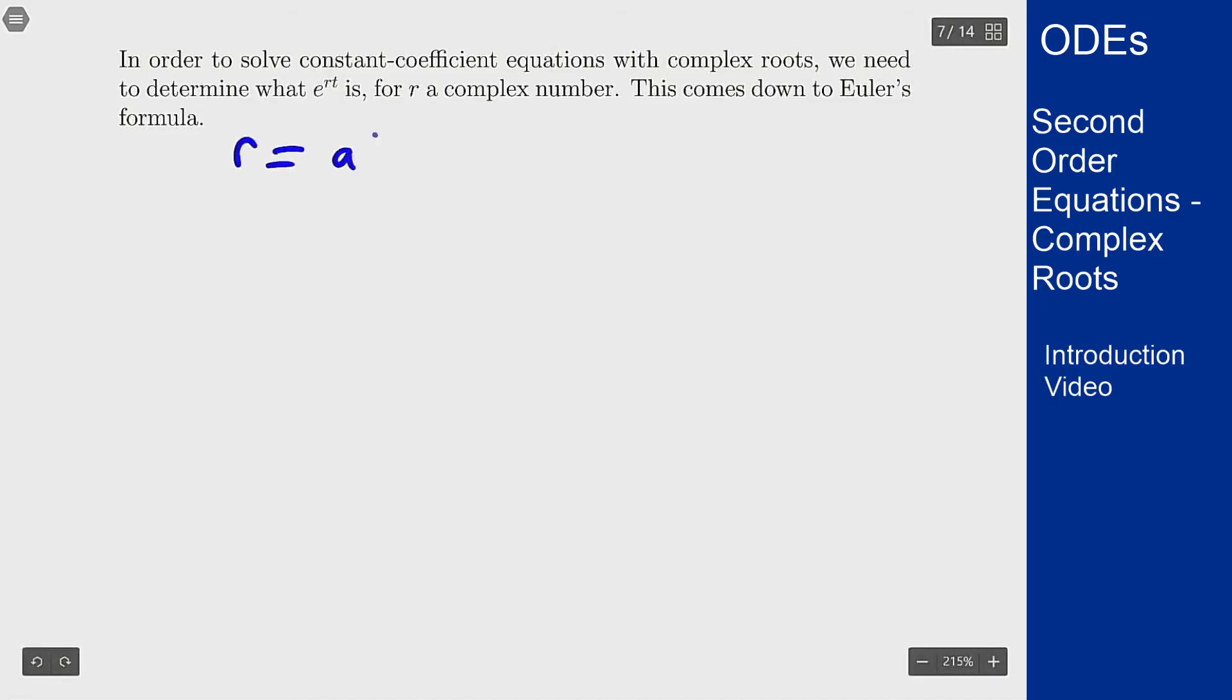And I want to write e^(rt). Well I can write that as e^((a + ib)t), which is e^(at + ibt), and that's e^(at) times e^(ibt). This part here is fine, I can deal with that.